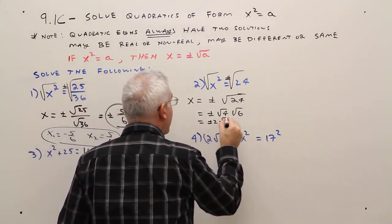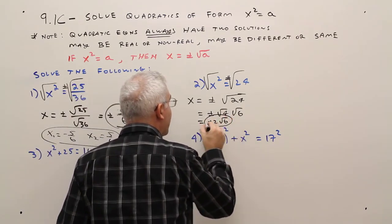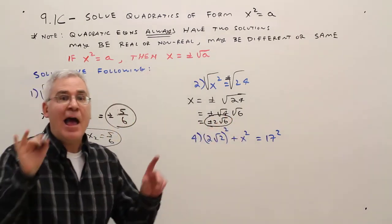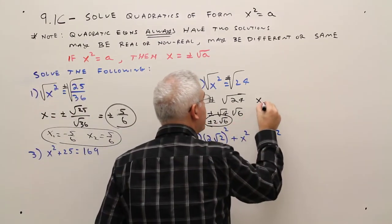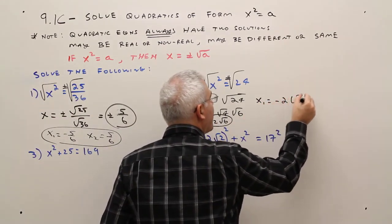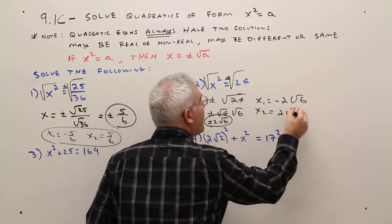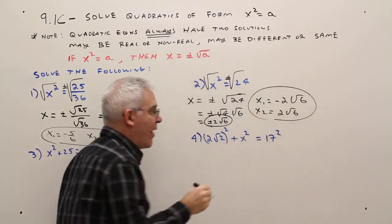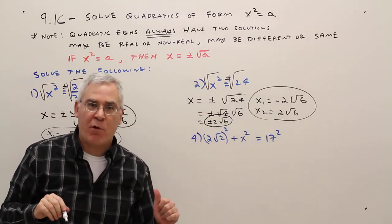Equals plus or minus 2 radical 6. Again, X sub 1 equals negative 2 radical 6, X sub 2 equals positive 2 radical 6. Just two different ways to express your answer.